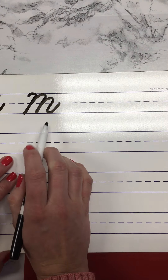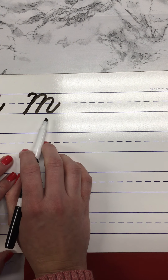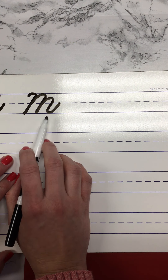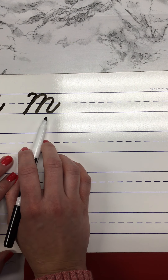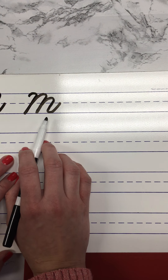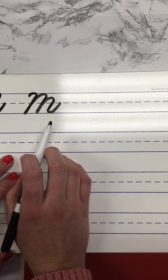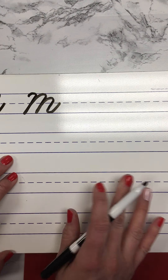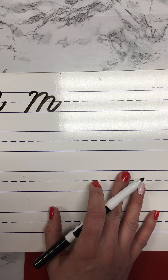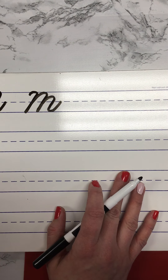What do you think this capital cursive letter is? Think in your head — please don't say it out loud. All right, on the count of three I want you to whisper it to me. One, two, three. Good. I heard some of you say this is the letter M — M like mom or magnet.